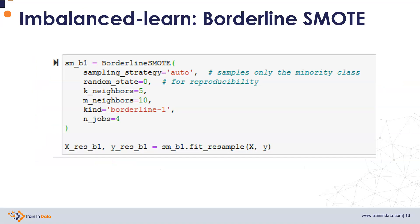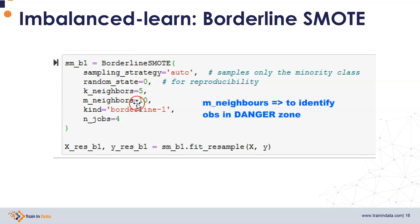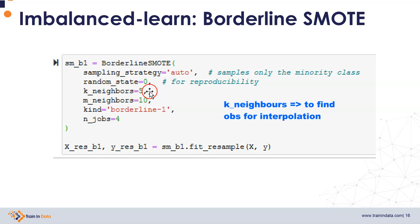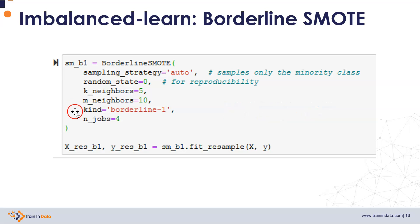We can apply Borderline SMOTE with imbalanced-learn using the BorderlineSMOTE class. We set sampling strategy to auto to sample the minority class only, and random state for reproducibility. The m_neighbors parameter determines the neighbors used to identify the danger zone, k_neighbors finds the neighbors from the minority class in the second step, and the kind parameter selects variant 1 or variant 2. Let's go to the Jupyter Notebook and look at the Python implementation.